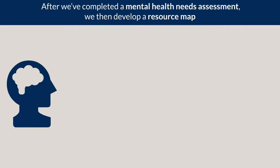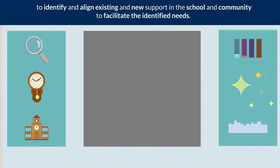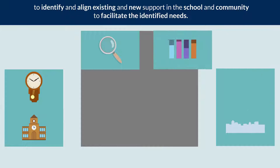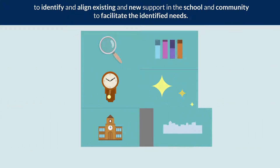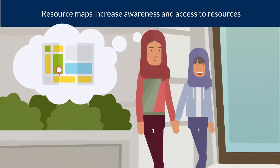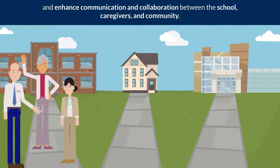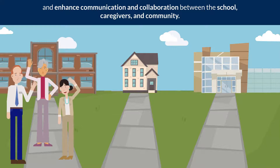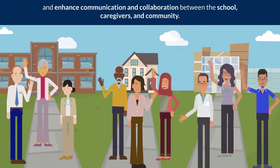After we've completed a mental health needs assessment, we then develop a resource map to identify and align existing and new support in school and community to facilitate the identified needs. Resource maps increase awareness and access to resources and enhance communication and collaboration between the school, caregivers, and community.